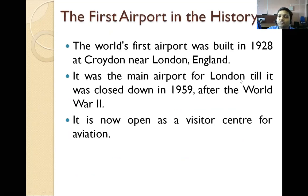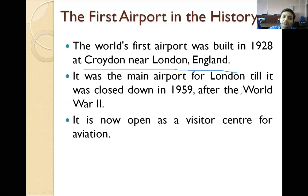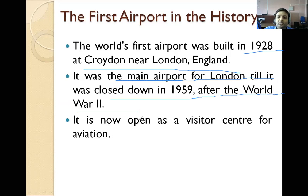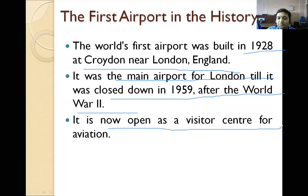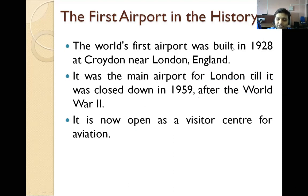The world's first airport was built in 1928 near London, England. It was the main airport for London until it was closed down in 1959 after the Second World War. It is now open as a visitor center for aviation.